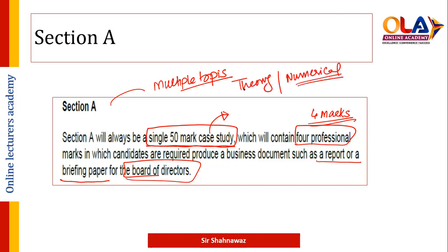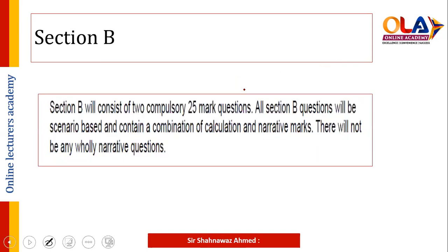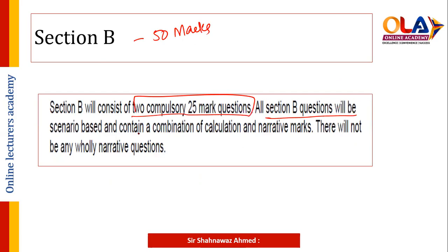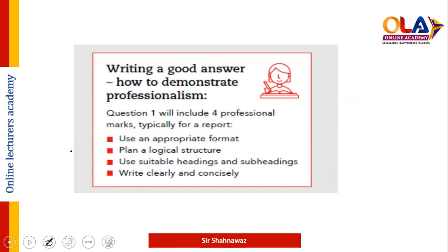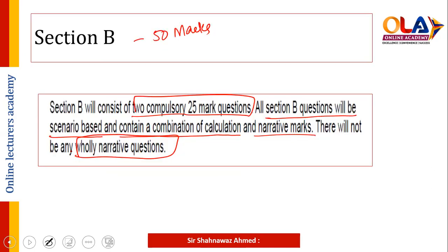Section B comprises 50 marks, with two compulsory 25-mark questions. All Section B questions will be scenario-based and contain a combination of calculation and narrative marks. There will be no purely narrative question — every question will have both theory and calculation parts. Since it is a computer-based exam, you will be given practice in CB format so you know how to time Section A and Section B questions, and how to use Word or Excel documents for presentation.